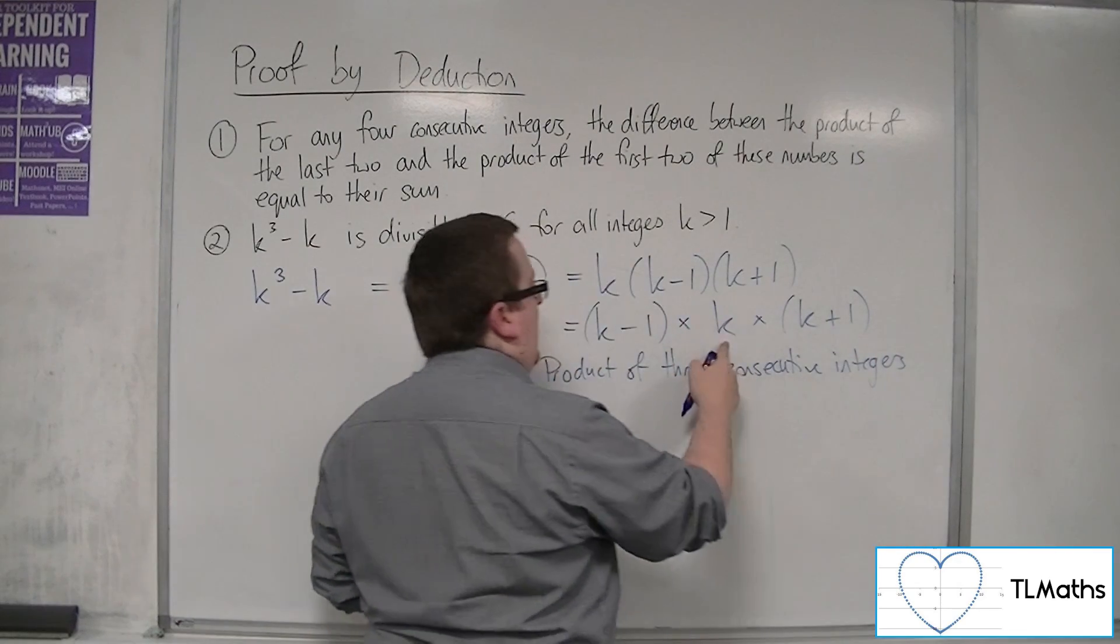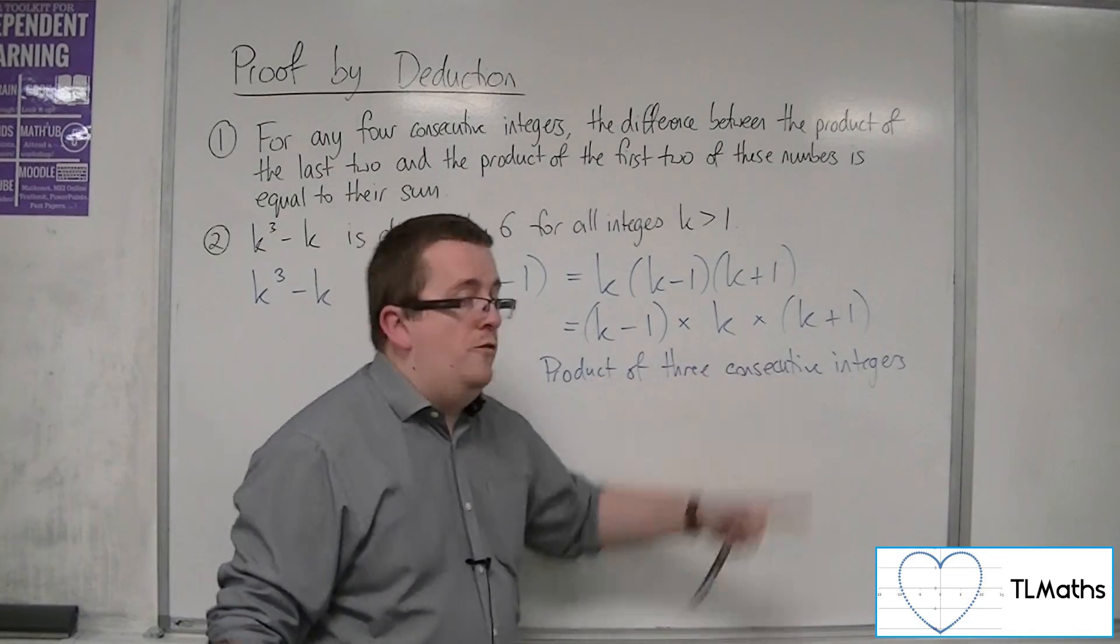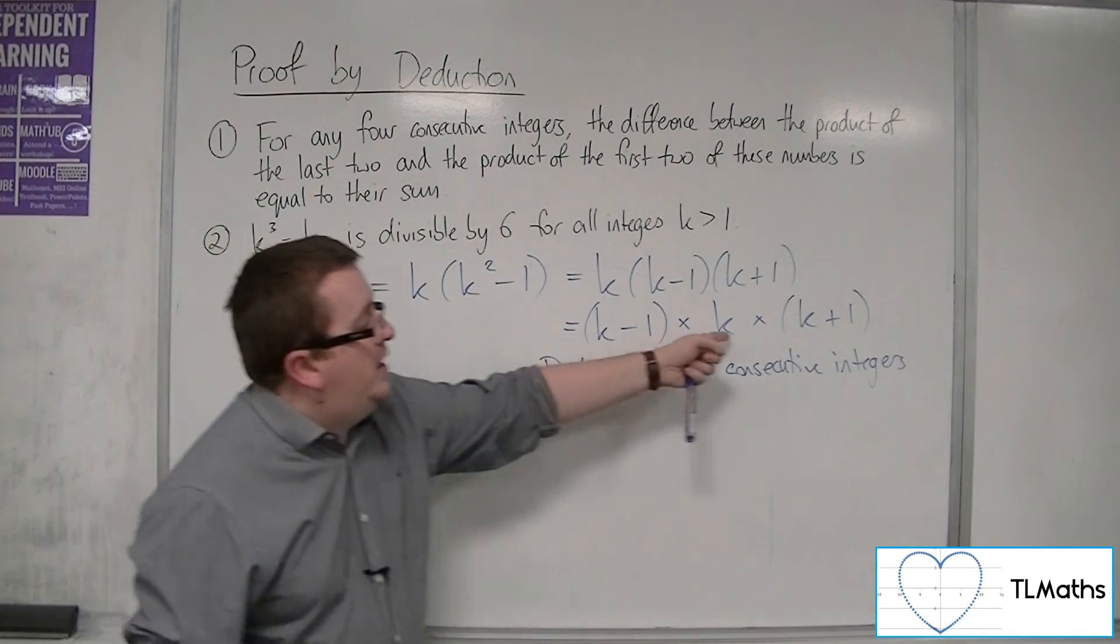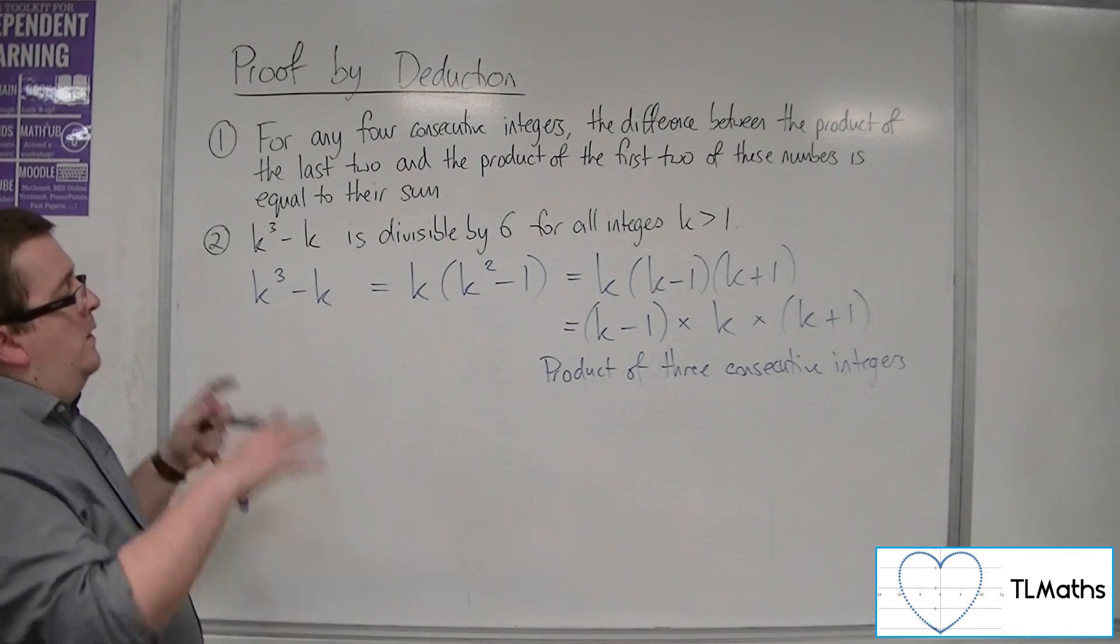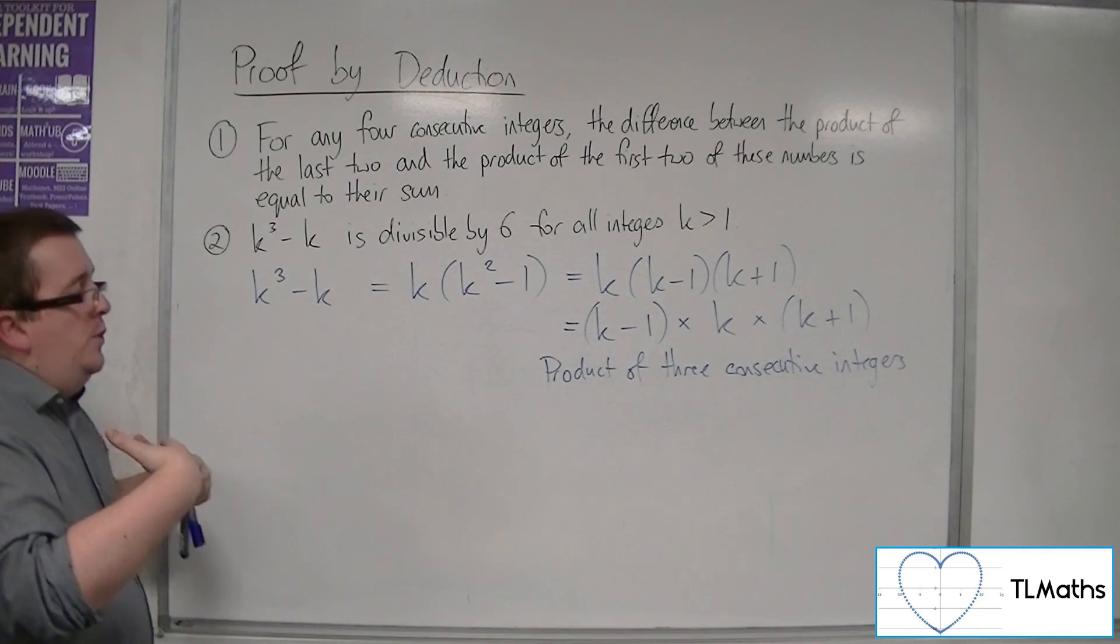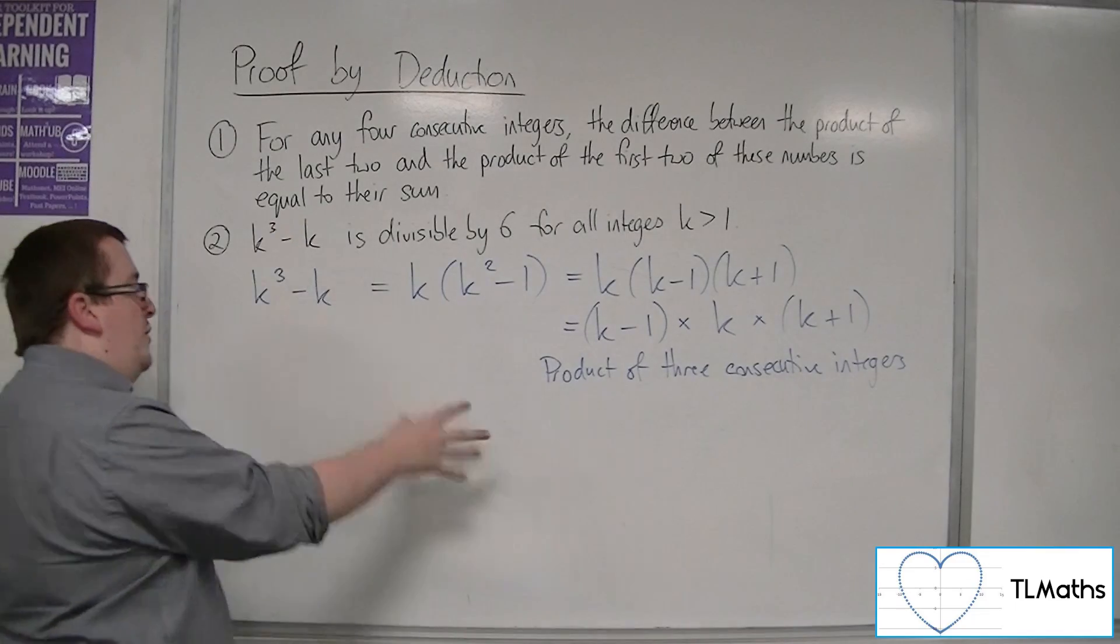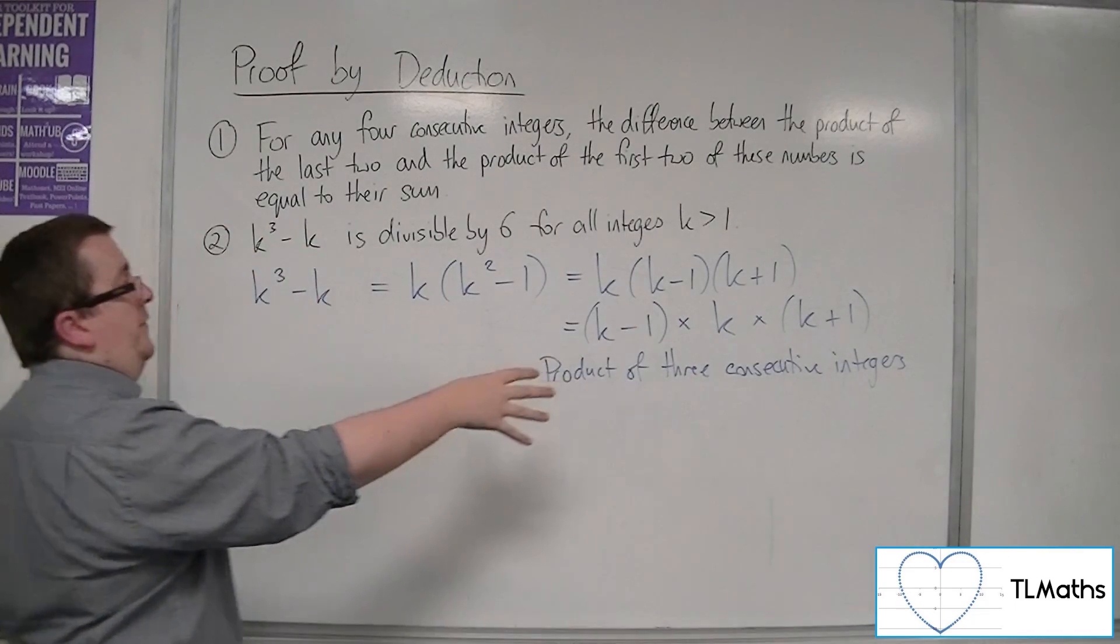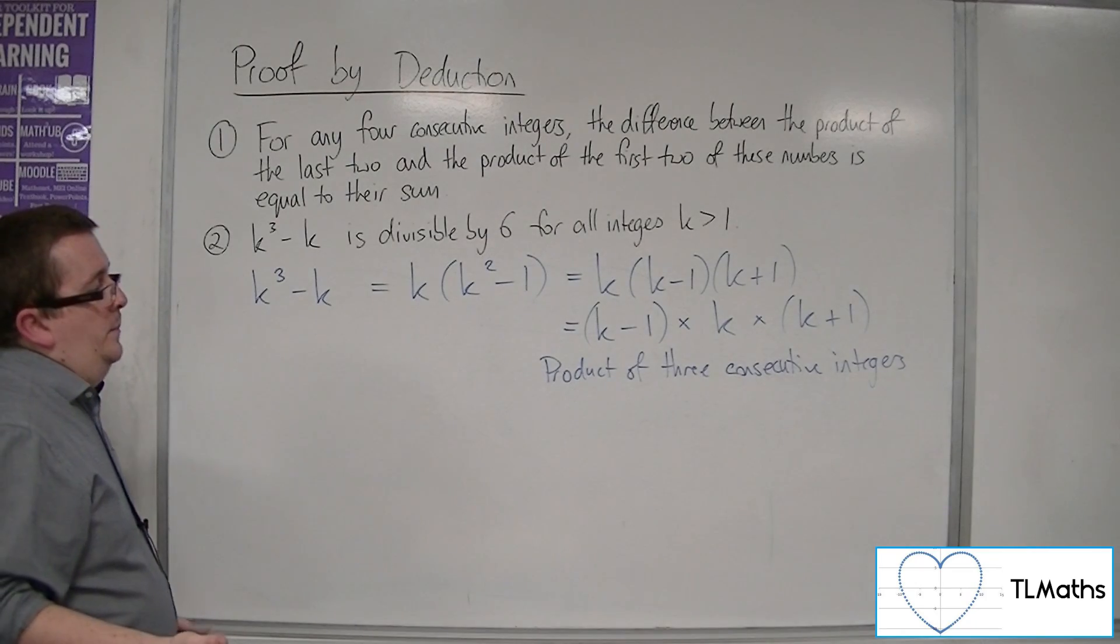that means what we've got here is actually the product of three consecutive integers. Because there's k, there's one less than k, there's one greater than k. So this could be 2, 3, 4, for example, or 100, 101, and 102. So we've got here the product of three consecutive integers. So really, number 2 is really asking, show that the product of three consecutive integers is divisible by 6.